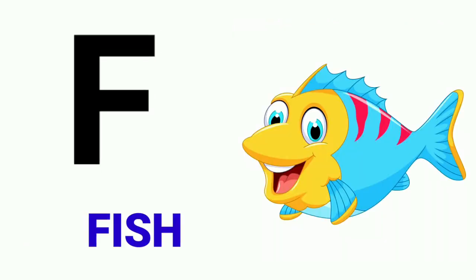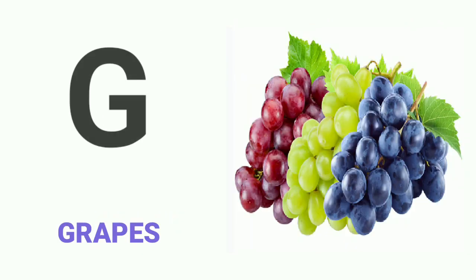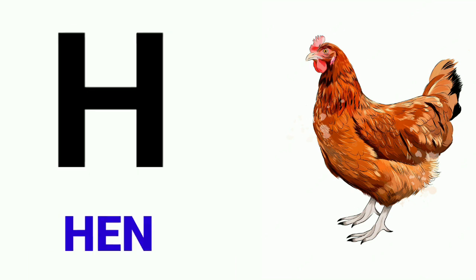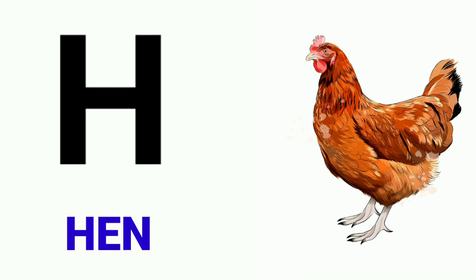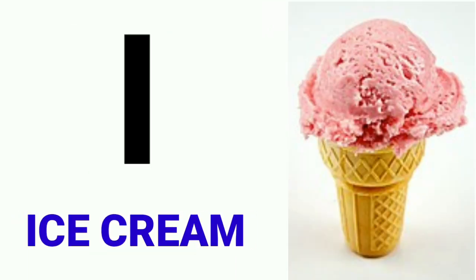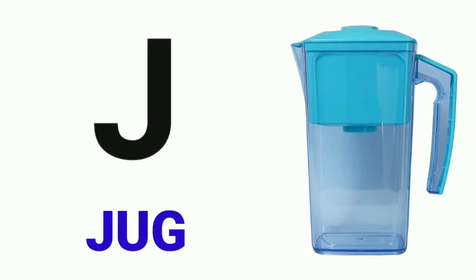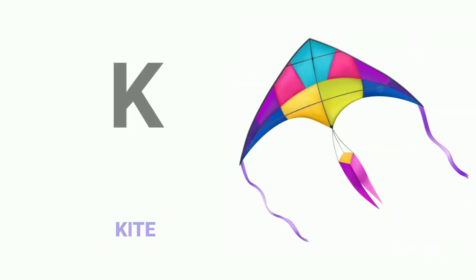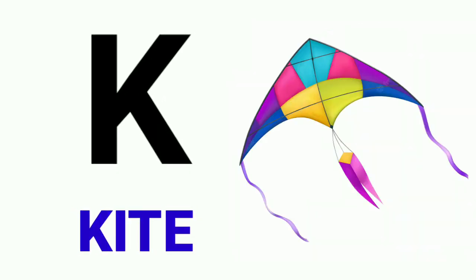F for fish, G for crabs, H for hen, I for ice cream, J for jug, K for kite.